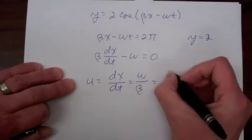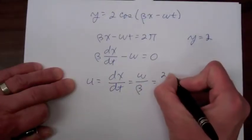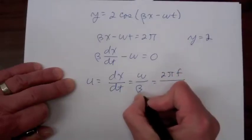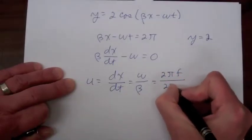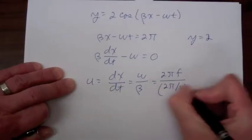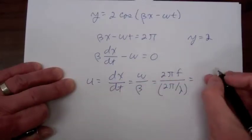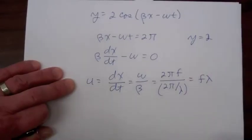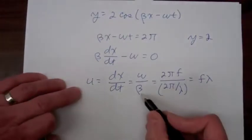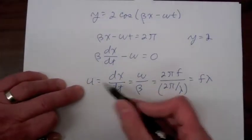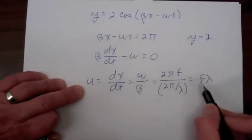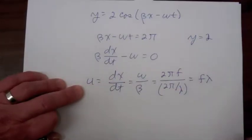Writing omega as 2πf and beta as 2π/λ, we get another form for the velocity of the wave: v = fλ, the frequency times the wavelength. Both expressions are useful: velocity equals ω/β, or velocity equals frequency times wavelength.